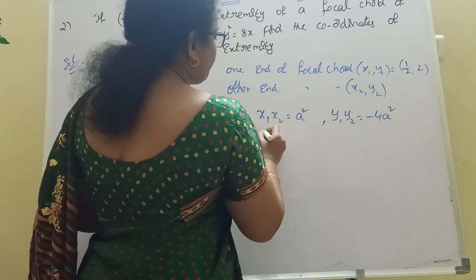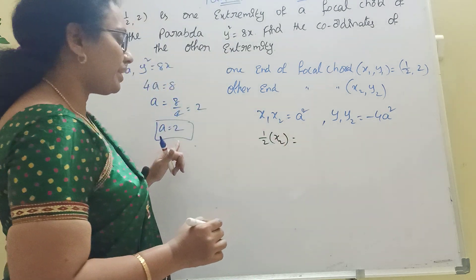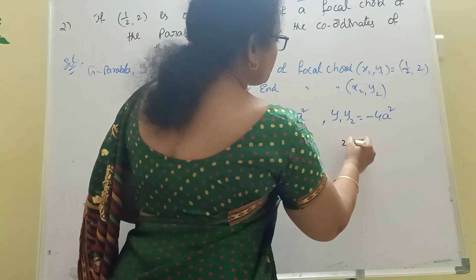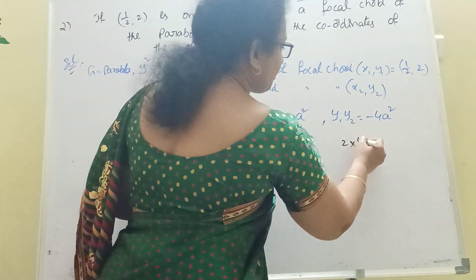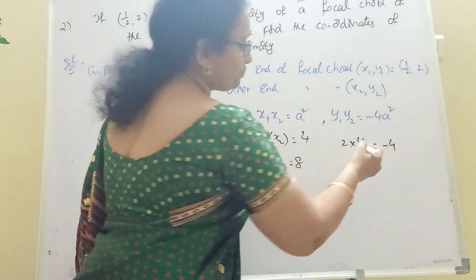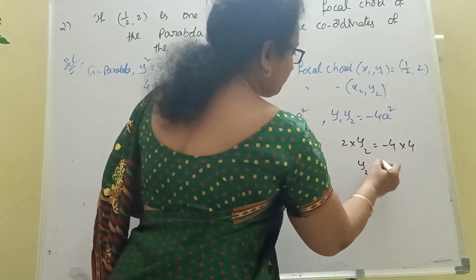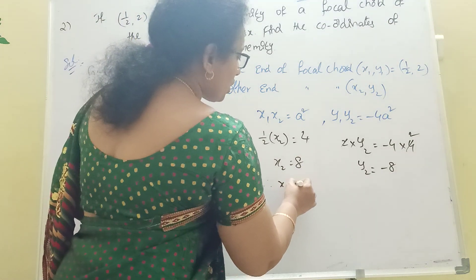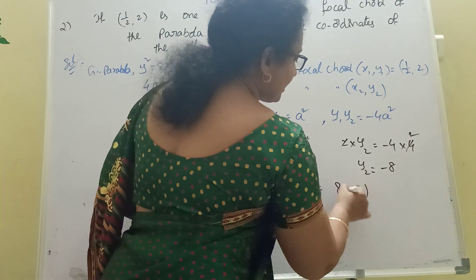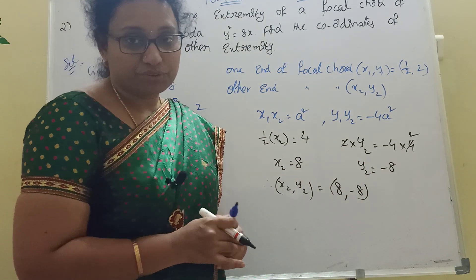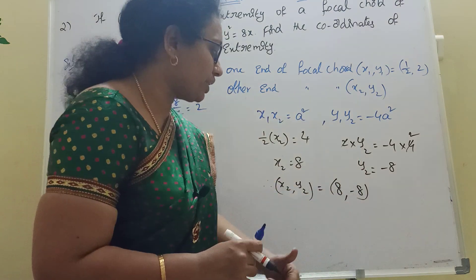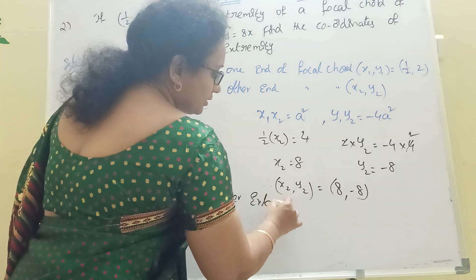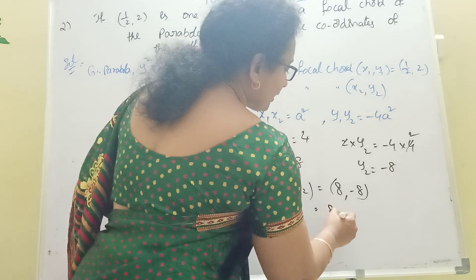Here x₁ = 1/2 and a = 2, so a² = 4. From x₁·x₂ = a²: (1/2)·x₂ = 4, so x₂ = 8. From y₁·y₂ = −4a²: 2·y₂ = −4·4 = −16, so y₂ = −8. Therefore the other extremity is (8, −8). Answer: (8, −8).